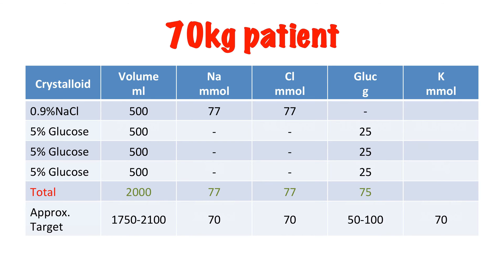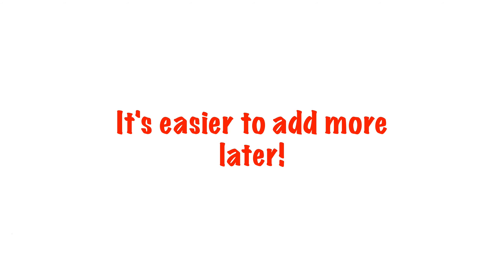Finally, potassium. Both sodium chloride and glucose can be had without potassium, or with 10 millimoles or 20 millimoles of potassium added to them. We still get a little twitchy over prescribing potassium, and rightly so, because it can be dangerous. Whilst the U&Es are normal on our patient, I'm going to be cautious and only use 20 millimoles of potassium in 3 of my 4 bags, giving a total of 60 millimoles rather than 70 millimoles. Then I'll recheck the U&Es tomorrow and see which way the potassium has gone. Because I always feel it's easier to add more than to try to remove it from the patient if we've given too much.